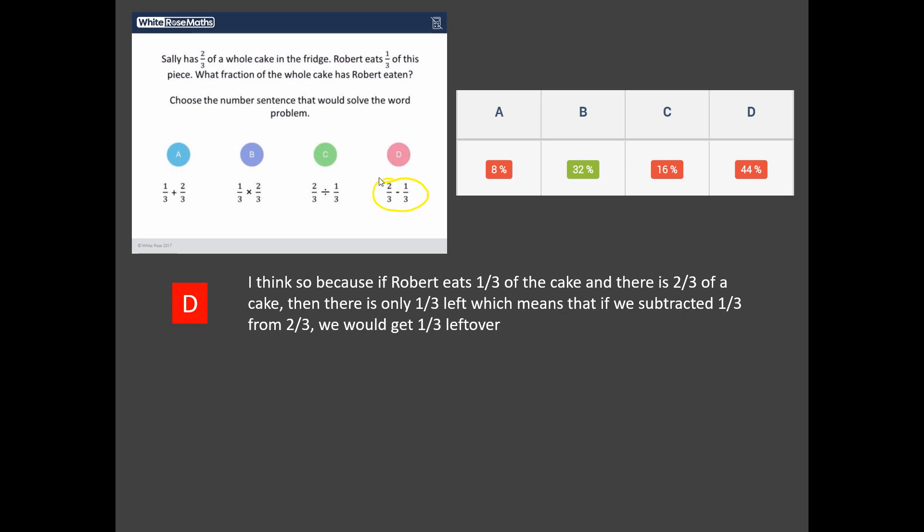So, look at that. Now, we've got this idea of two-thirds subtract, one-thirds have one-third left over. But Robert isn't eating a third of the whole cake. Robert's eating a third of Sally's cake, so it doesn't quite work like that.